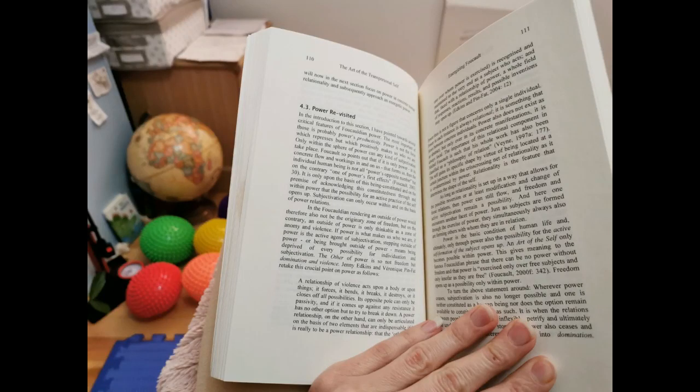Chapter 4, Title 4.3, Power Revisited. In the introduction to this section, I have pointed towards several critical features of Foucauldian power. The most important of those is probably power's productivity. Power is not the force which represses, but which positively makes us who we are. Only within the sphere of power can any kind of subjectivation take place.